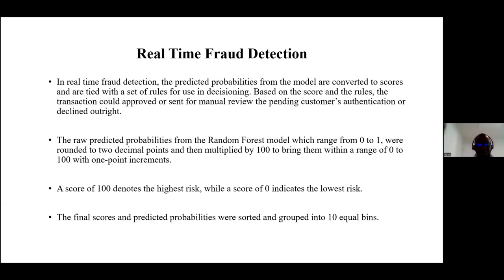With that in mind, the predicted probabilities from my final random forest model — which range from zero to one — were rounded to two decimal points and then multiplied by 100, bringing them within a score range of zero to 100 at one-point increments. A transaction with a score of 100 denotes a high-risk transaction, while a transaction with a score of zero denotes a low-risk transaction. The final scores and predicted probabilities were sorted and grouped into 10 equal bins for further analysis.